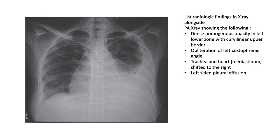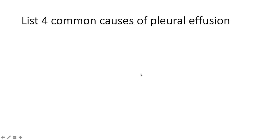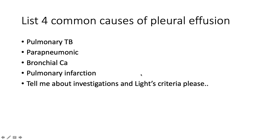There is obliteration of the left costophrenic angle, and the trachea, heart, and mediastinum are shifted to the right — the trachea is sitting more on the right-hand side. This is a left-sided pleural effusion. Four common causes in this clinical setting are pulmonary TB, parapneumonic effusion, bronchial carcinoma, and pulmonary infarct.